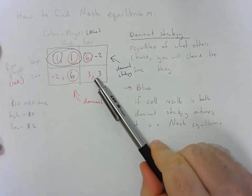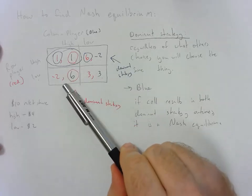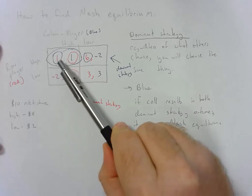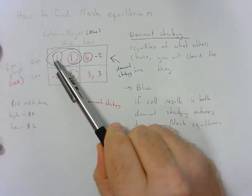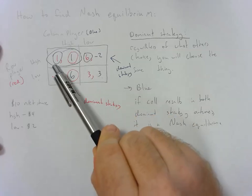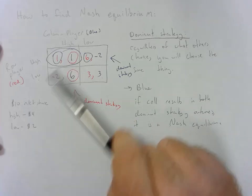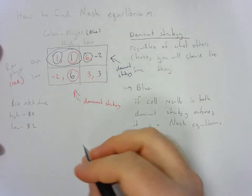So in this case, what we needed to do was figure out, okay, what is the dominant strategy for each player? In this case, both dominant strategies resulted in them choosing the high advertising amount, and if both of them choose the high advertising amount, regardless of what the other player does, that will be the Nash equilibrium.